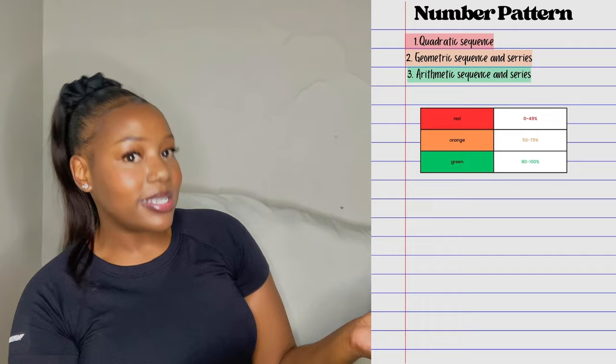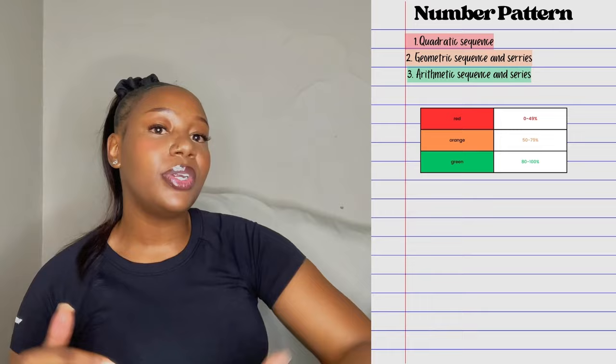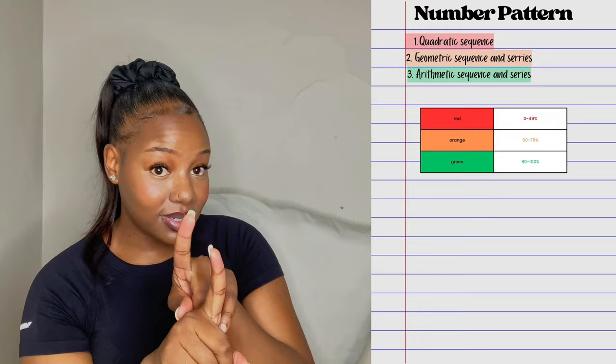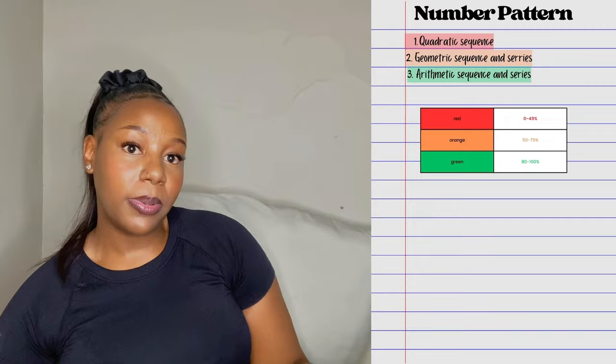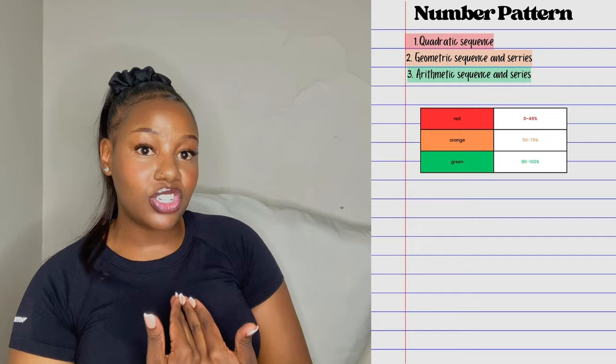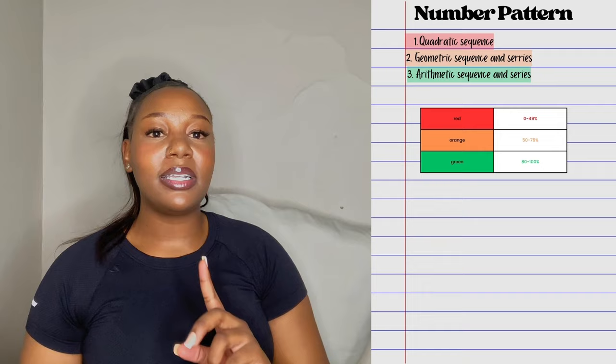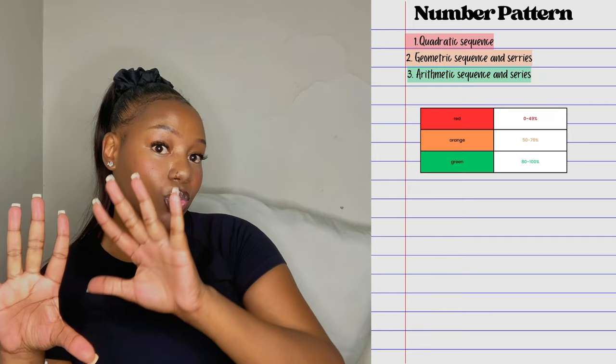When you study, do not focus on the green section for now since you already understand it. Focus on your red first. Since this is maths, you need to understand where the problem is lying — is it that specific question, or is it your foundation? If you are red on a section, I would suggest going back to Grade 10 and Grade 11 and doing those types of questions. For quadratic patterns, since they start in Grade 11, go back and revise your Grade 11 work.